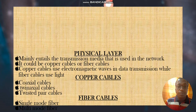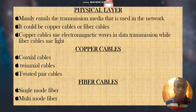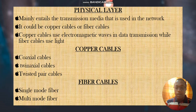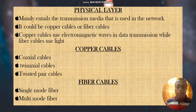The Physical layer entails the transmission media used in a network. It could be copper cables or fiber cables. Copper cables use electromagnetic waves in data transmission, while fiber cables use light. For copper cables, we have three types: coaxial cables, twinax cables, and twisted wire cables. The difference is that a coaxial cable has one copper strand, a twinax cable has two copper strands, and a twisted wire cable has four pairs of copper strands.